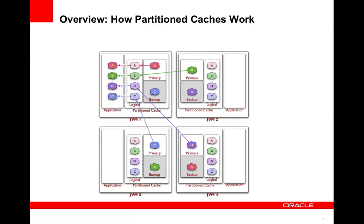Data is distributed across storage-enabled members by partitions. A specific key is bound to a specific partition for the entire life of the cache. As you can see in this diagram, each JVM is responsible for holding a primary set of keys and a backup set of keys. These sets are based on partitions, where each member is responsible for a unique set of primary partitions and a unique set of backup partitions.